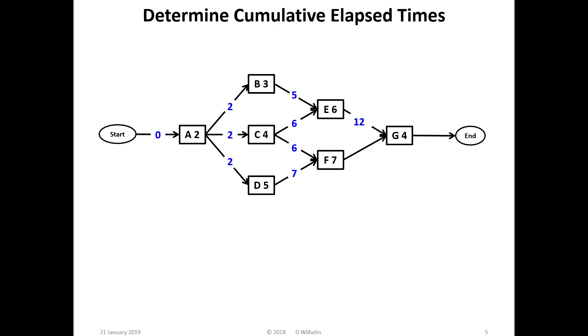Task F also has two prerequisite tasks, can start after day seven, takes seven days, so is complete after 14 days. One more task to complete. Task G can start after 14 days, takes four days, so is complete after 18 days. And we're done. The project cumulative elapsed time is 18 days.